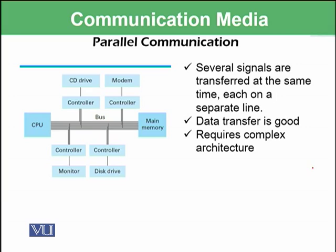For example, we have a bus that has a number of wires available, and on each of the wires we can send multiple signals. Suppose there is only one wire available between the CPU and memory — in such a situation it would be very difficult to communicate because the data would have to wait a very long time as there is only one connection.